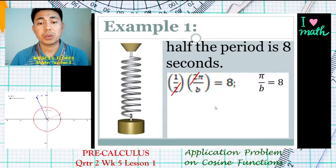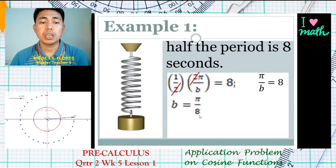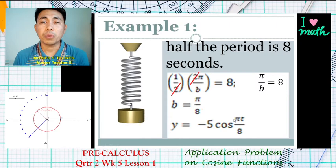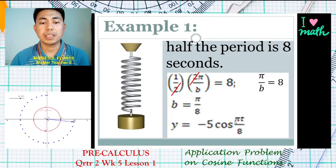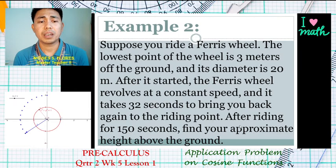We want to solve for the value of b from our working equation. By cross-multiplying, b equals pi over eight. Substituting back, we have y equals negative five cosine of (pi over eight) times t. The final answer for the equation of motion is y equals negative five cosine(πt/8). Our second example: suppose you ride a ferris wheel.